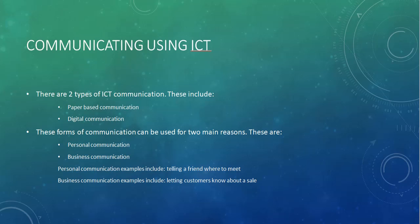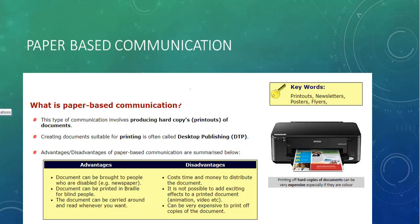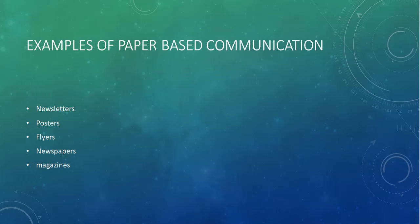Paper-based communication is where we have to print out the media and have it in physical paper, whereas digital communication is almost entirely online. When communicating, you can do so for personal reasons or for business purposes. Some examples of paper-based communication — where we have hard copies or printouts — include newsletters, posters, flyers, newspapers, magazines, and brochures.